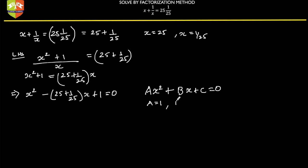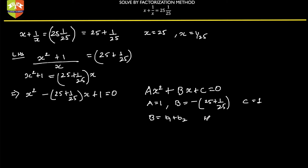Clearly, a equals 1, b equals minus 25 plus 1 by 25, and c equals 1. In the factorization method, we have to break b into two parts — b1 and b2 — such that b1 plus b2 equals b and b1 times b2 equals a times c. So b1 times b2 must equal a times c equals 1. There is also an indication from the form 25 and 1 by 25: b1 will equal minus 25 and b2 will equal minus 1 by 25.